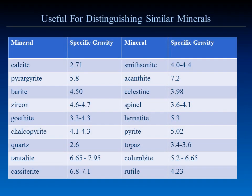Other minerals easily distinguished using specific gravity: smithsonite has a specific gravity much higher than calcite, yet they look alike. We already mentioned barite and celestine. Goethite and hematite frequently look alike but have very different specific gravities. Chalcopyrite and pyrite. Field collectors know topaz is noticeably heftier than quartz. Columbite and tantalite. So it's a very useful tool in narrowing down the possibilities of what the mineral species is.